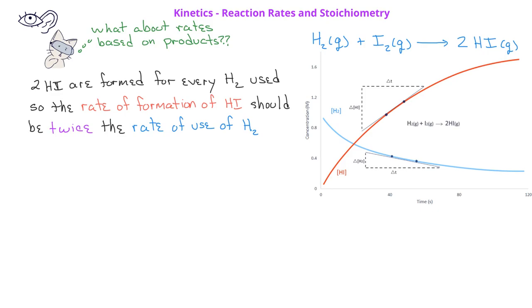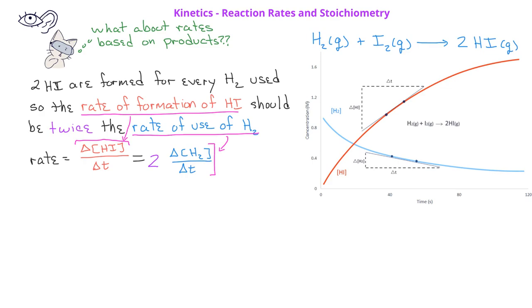We could write this mathematically as the rate of formation of hydrogen iodide — delta HI over delta T — is twice the rate of consumption of H₂, written as two times delta H₂ over delta T. Since the rate of change of iodine is the same as the rate of change of hydrogen, we could also write that the rate of change of hydrogen iodide equals two times the rate of change of iodine.